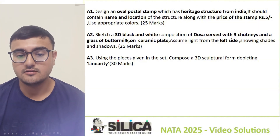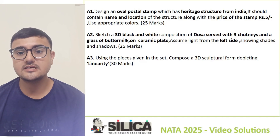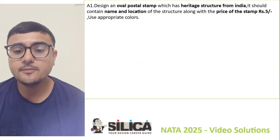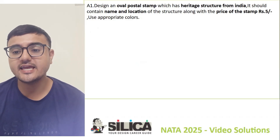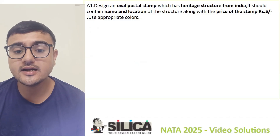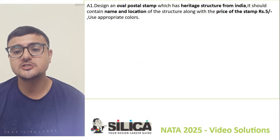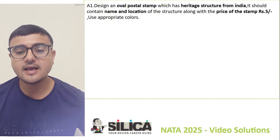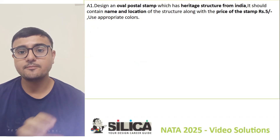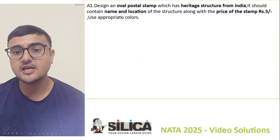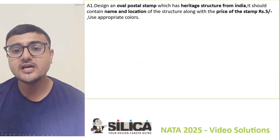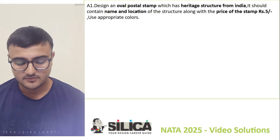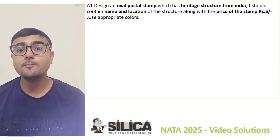Let's discuss each question in detail. The A1 question: design an old postal stamp which has a heritage structure from India. It should contain the name and location of the structure along with the price of the stamp — Rupees 5 — and use appropriate colors. Basically, in this composition you have to create an oval-shaped postal stamp featuring a heritage structure from India.